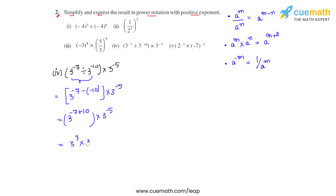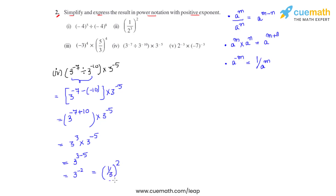The bases are same and in multiplication, so powers get added: 3 raised to 3 plus negative 5, which is 3 raised to negative 2. Since the power is negative, this is written as 1 over 3, whole raised to 2.